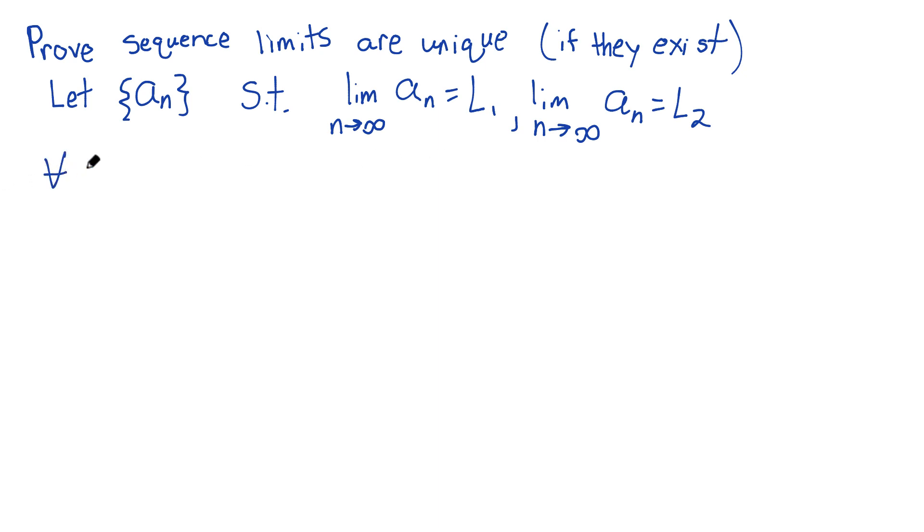Well, it means that for all epsilon greater than zero, there exists some capital N. I'll call it N1 to go with limit one. Such that for every little n after this capital N, the absolute value of the sequence minus the limit is less than epsilon. And I'm going to do a very common thing in analysis, especially when you're doing things with limits and two pieces. I'm going to make this less than epsilon over two. Since I can make epsilon basically as small as I want, I can always just cut it in half as well.